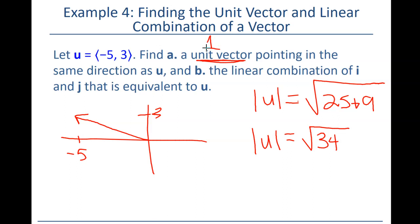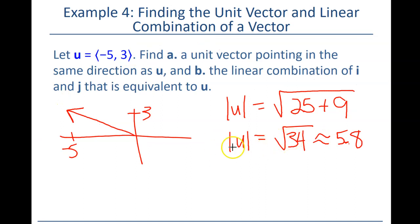So what does that mean? That means since this is the square root of 34, we need something that points in the same direction, but has a magnitude of only 1 instead of almost 6. So what do we do? Well, a unit vector will always be the original vector divided by its magnitude. So what do I mean by that? Well, if we take this negative 5 and 3, and we divide it by the square root of 34, or multiply it by 1 over the square root of 34.